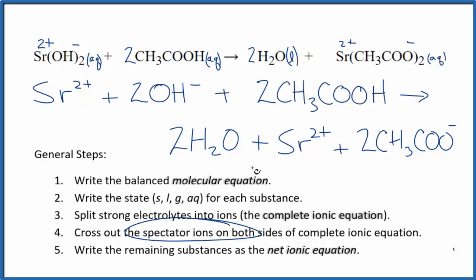Now we can cross out those spectator ions. If I look at the reactants and the products, I see I have the strontium ion here and here. So that's the spectator ion. We can cross that out. Everything else, though, is unique. So this is the net ionic equation for strontium hydroxide plus acetic acid.